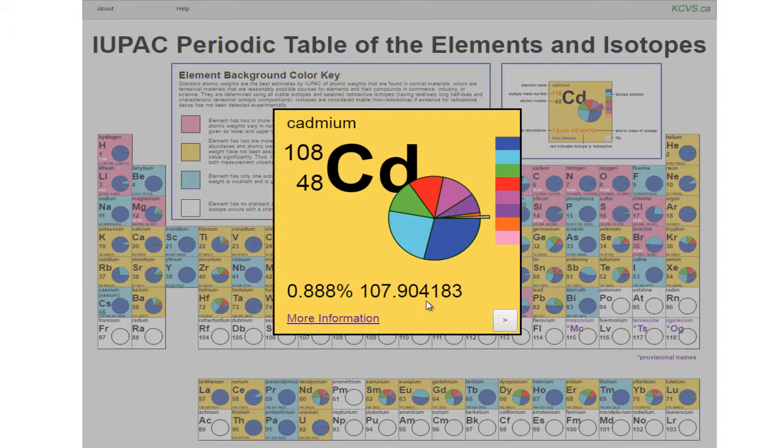The atomic masses of isotopes that are shown in black denote that the isotope is stable, meaning that no radioactive decay has been experimentally detected.